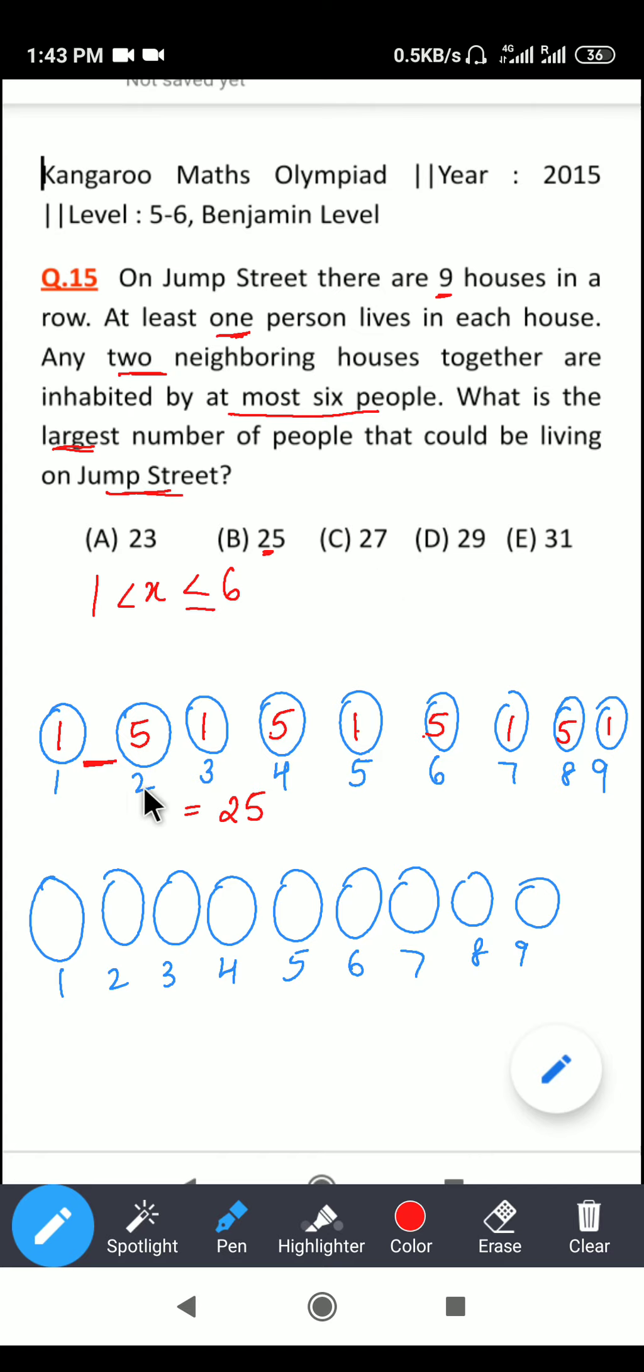Now if I reverse this order, because if I write it this way, the conditions would still be met that at least one person living in the house and the total number of people inhabiting the two neighboring houses do not exceed six.